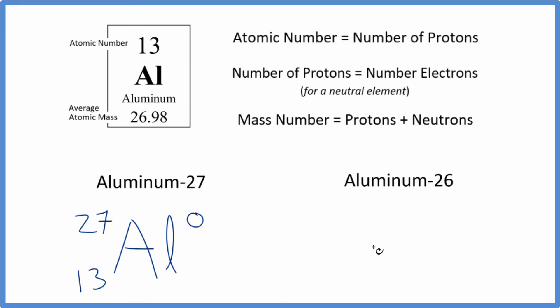So we write the element symbol. Then we have the mass number up here. That's the 26. The atomic number down here, 13. It's always 13 for aluminum. And again, there's no charge. So it's just going to be a zero here for the charge, ionic charge. And that's the isotope notation for aluminum 26.